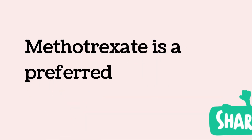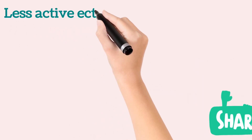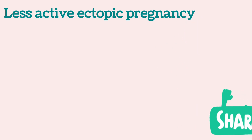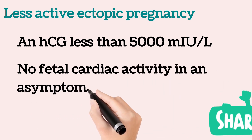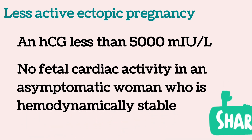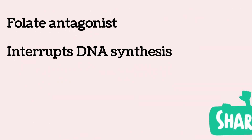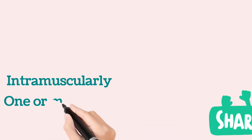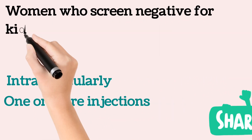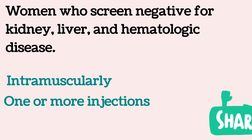Medical management with methotrexate is the preferred option in less active ectopic pregnancy, characterized by HCG less than 5000, no fetal cardiac activity, and an asymptomatic hemodynamically stable woman. Methotrexate, a folate antagonist, interrupts DNA synthesis and thus inhibits the growth of trophoblastic cells. It can be administered intramuscularly in one or more injections to a woman who screens negative for kidney, liver, and hematologic disease.